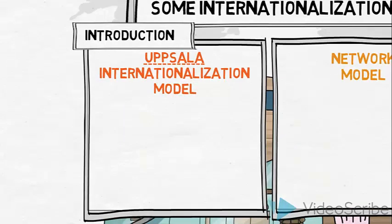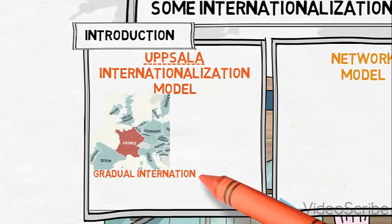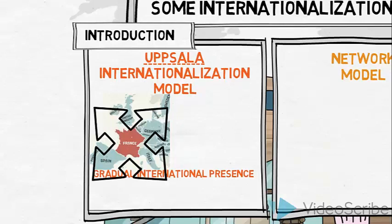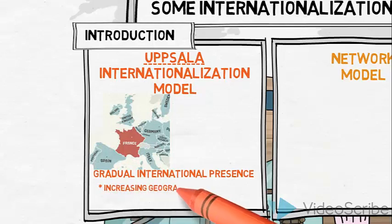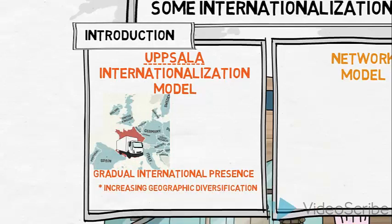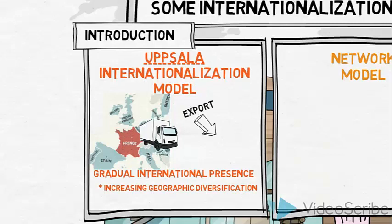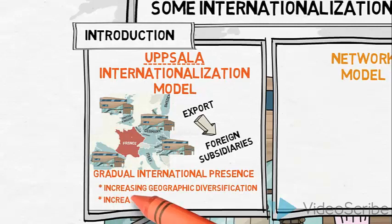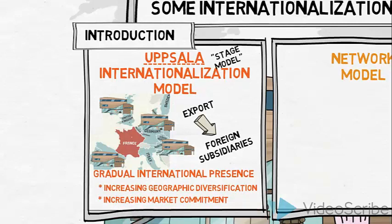The Uppsala Internationalization Model is known for describing that many organizations obtain a gradual international presence, and that this is done in two aspects. In a geographic aspect, by starting with close-to-home markets and gradually expanding through the world market, hereby showing an increasing geographic diversification. And also through a move from initial sporadic export to finally setting up sales and/or production subsidiaries in the foreign markets, hereby showing an increasing market commitment. The Uppsala Model is also called the Stage Model as it describes the process of an organization's internationalization in stages measured on these aspects.